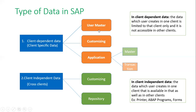Examples of client dependent data include user master data, customizing, and applications. Client independent data, on the other hand, maps across clients - it is in customizing and the repository. Examples of client independent data include printers, programs, and smart forms. These programs and forms fall under client independent data.